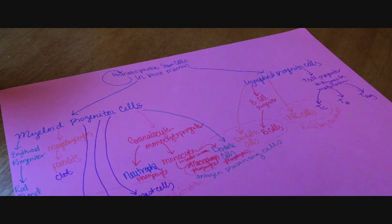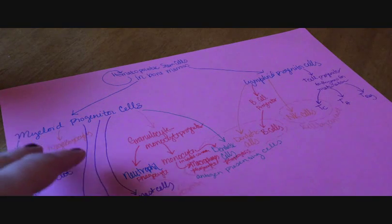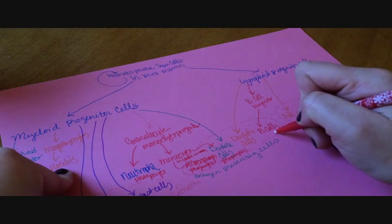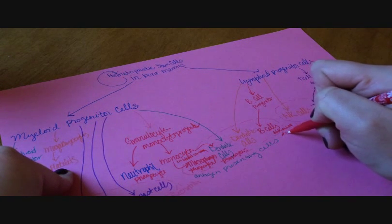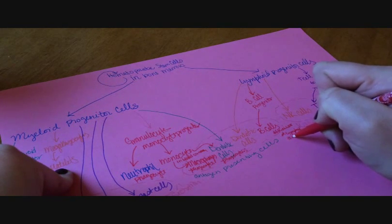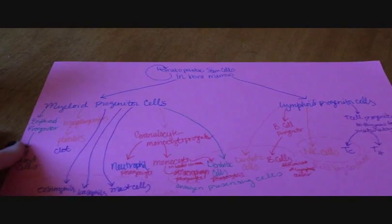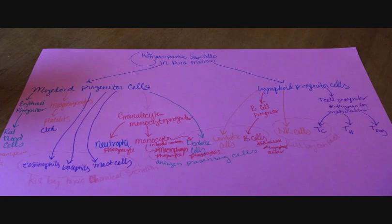B cells differentiate further in the lymphoid center. I'll write that down. That's a pretty good start. Is there anything else I should add here? I think it looks pretty good. Thank you for helping me learn hematopoiesis. Have a good night.